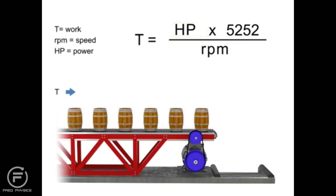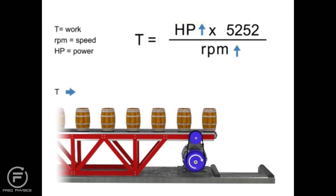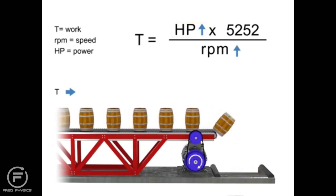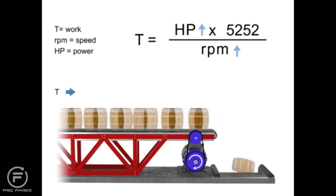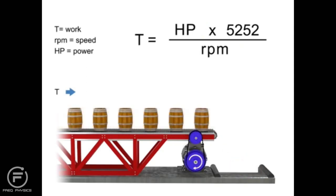Let's say we wish to keep torque constant, but want to increase the production of barrels. If the torque — or number of barrels on the conveyor belt — remains constant, but speed increases, then the horsepower of the motor also increases. In other words, a more powerful motor is required to produce the same amount of torque more quickly. Similarly, the opposite is true: if we wish torque to remain constant and decrease speed, then the horsepower of the motor also decreases.